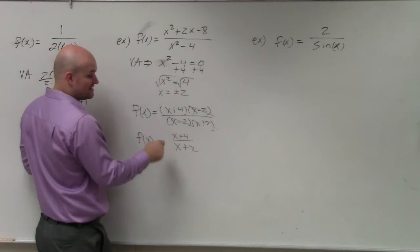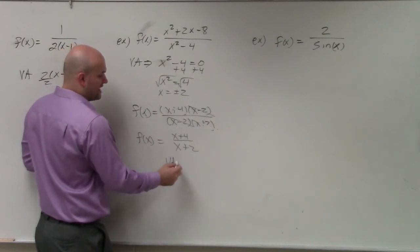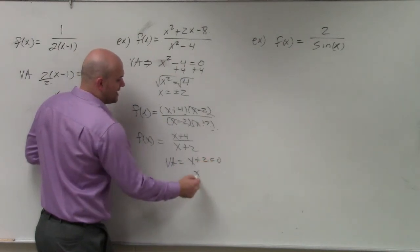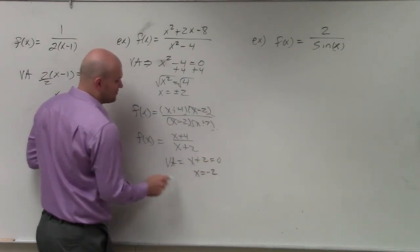So in reality, the only thing that's not removable, our real vertical asymptote, is x plus two equals zero. So x equals negative two is our vertical asymptote.